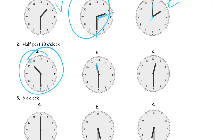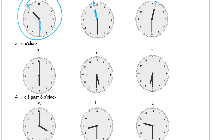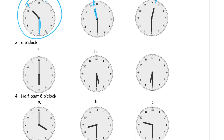This one here would be half past eleven because it's in between the eleven and the twelve. And this here would be half past twelve because it's in between the twelve and the one. Six o'clock — this is just regular o'clock, so the minute hand should be pointing up to the twelve and the hour hand right on the six.